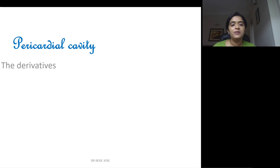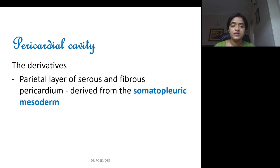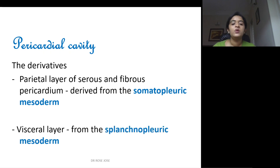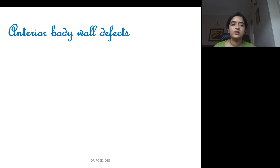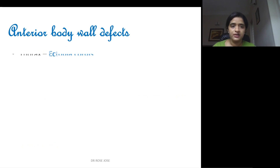Coming to the pericardial cavity derivatives: the parietal layer of serous pericardium and the fibrous pericardium are derived from the somatopleuric mesoderm, whereas the visceral layer of the pericardium is developed from the splanchnopleuric mesoderm.